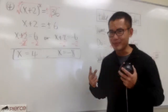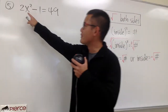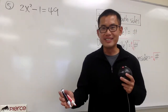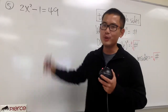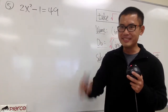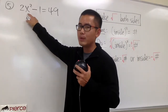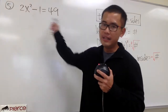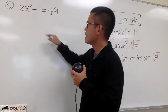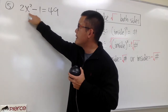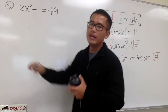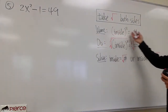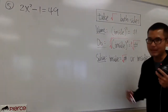Now let's check out the second example. For this one, we have 2x squared minus 1 is equal to 49. Let me ask you guys: how many times do we see x in this equation? Only one time — this is the only place we have x, and this is x to the second power. Since there's no other x, we can just try our best to isolate x squared, put all the numbers on the other side, and we'll end up with what we want. Let me show you how.